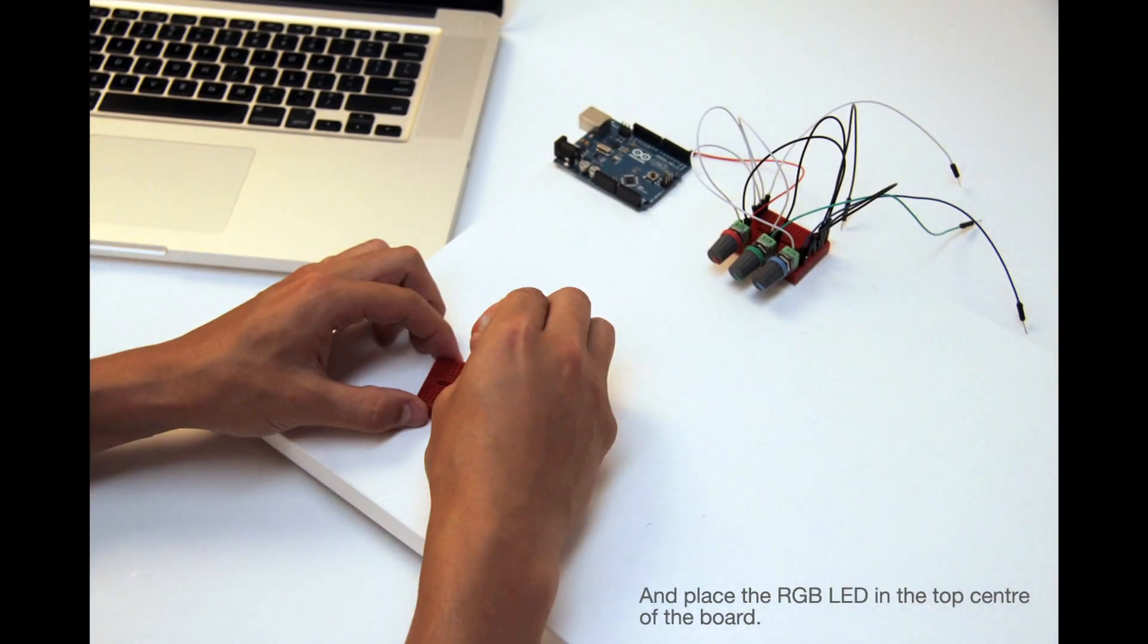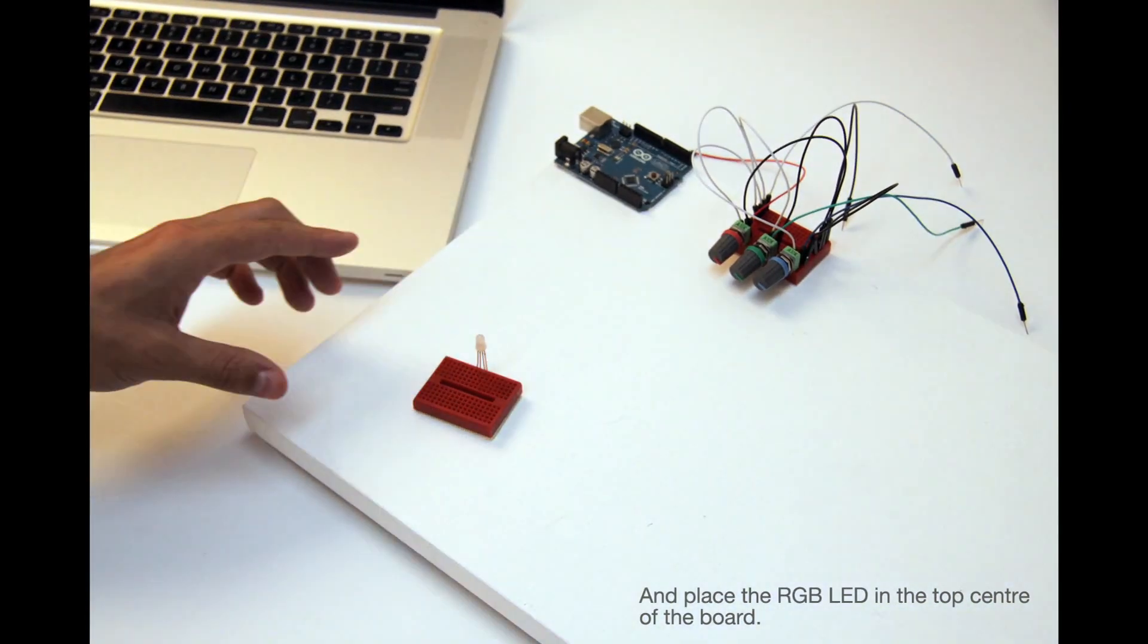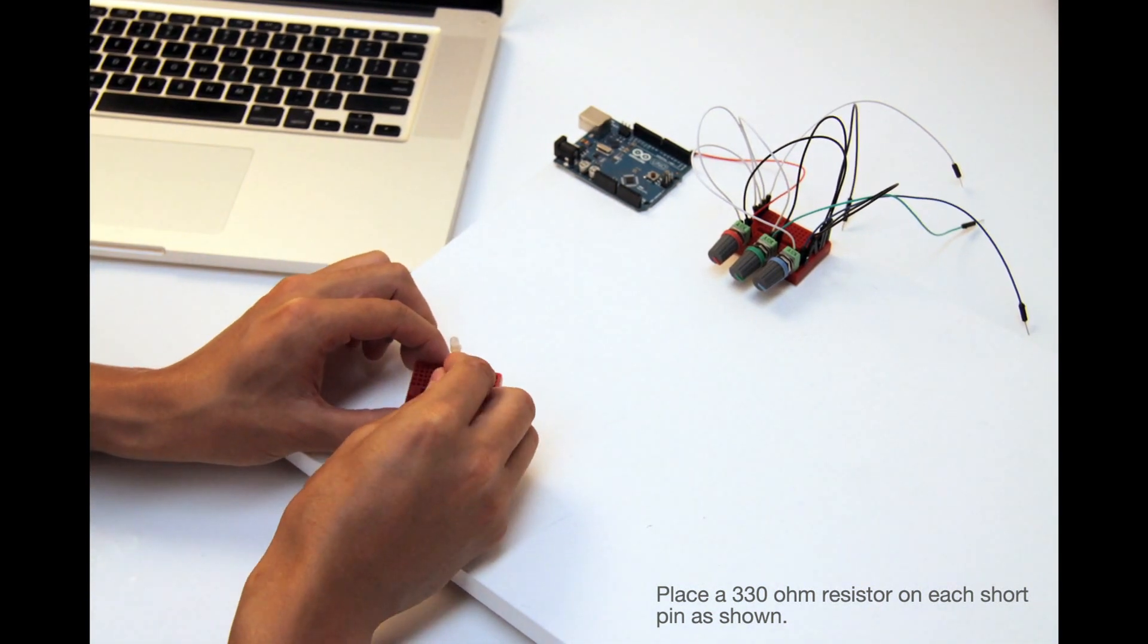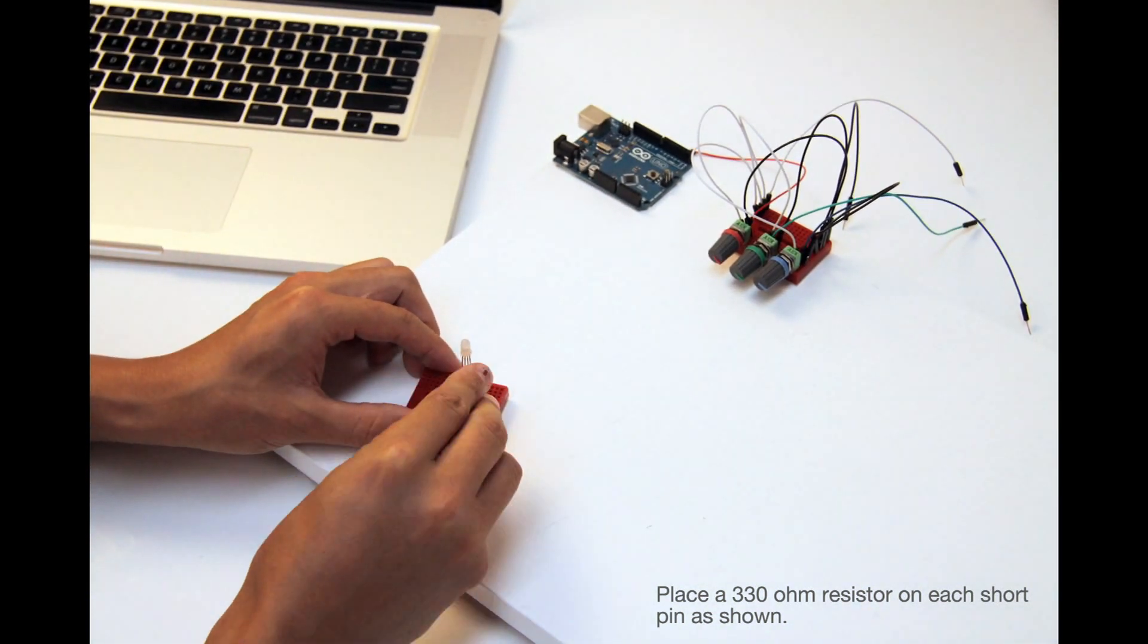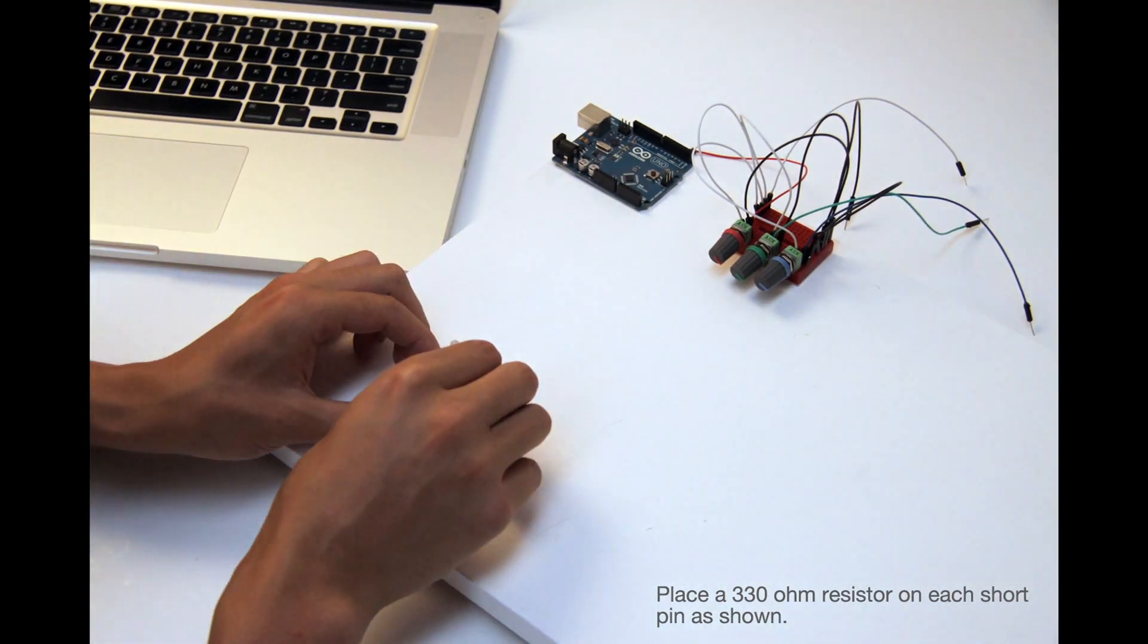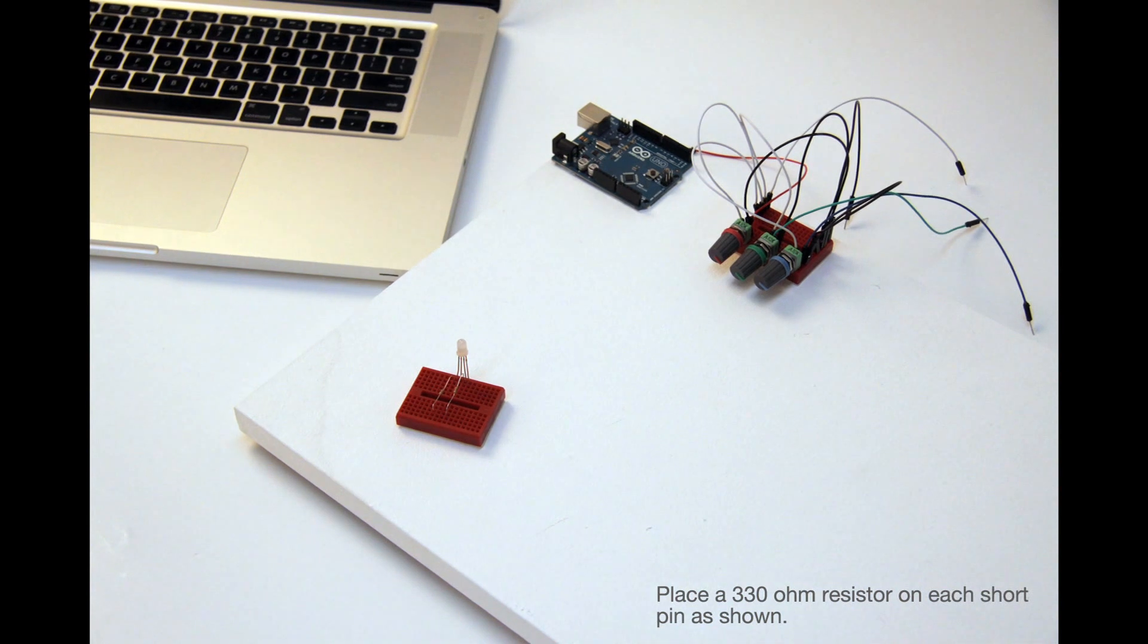Now take the second breadboard. Place the RGB LED in the center at the top. Place a 330 ohm resistor on each of the color pins. Leave the ground empty.